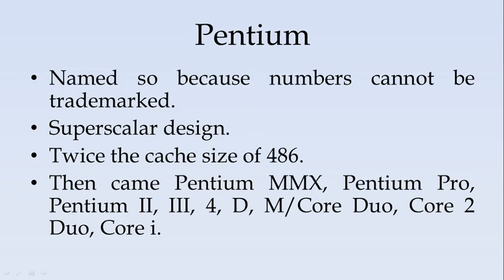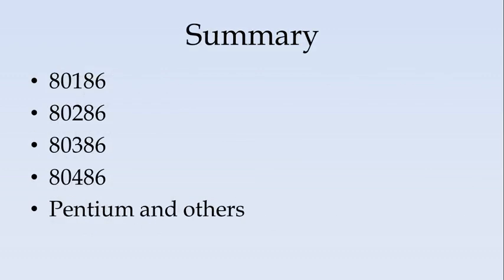The Pentium was a superscalar design and had twice the cache size of the 486. Then came the Pentium MMX, Pentium Pro, Pentium 2, Pentium 3, Pentium 4, Pentium D, Pentium M, Core, Core Duo, and Core 2 Duo. Now we have the Core i3, i5, and i7. These are the later versions of the Pentium processors. In summary, we have seen the 80186, 80286, 80386, 80486, and the Pentium processors.